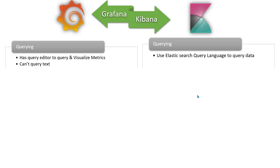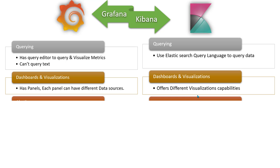Kibana connects only to Elasticsearch and provides powerful query language capabilities to easily query different types of logs. By default, people use the Elasticsearch query language, and there is also KQuery available. All of these make it very easy to analyze different types of logs.